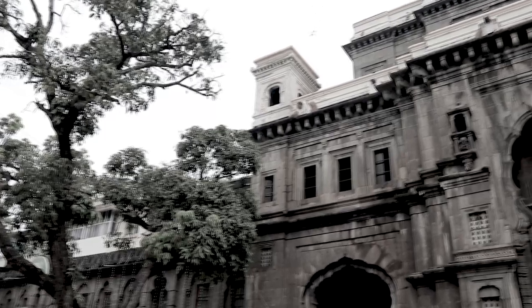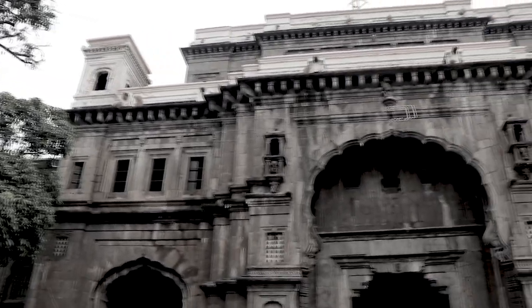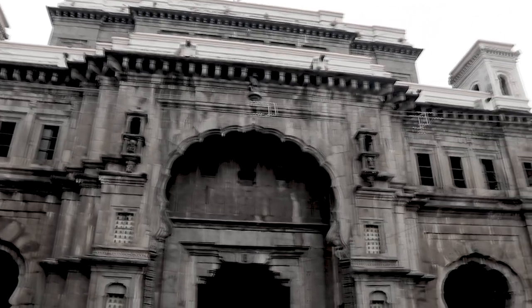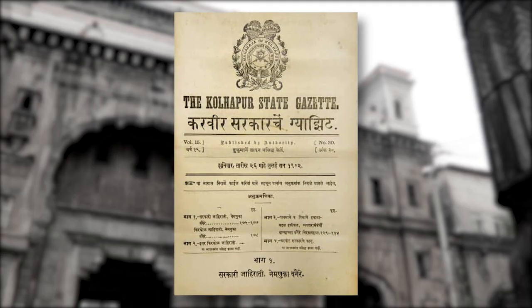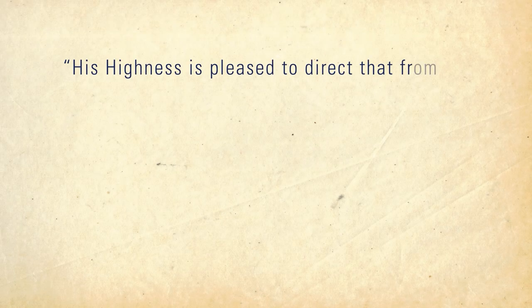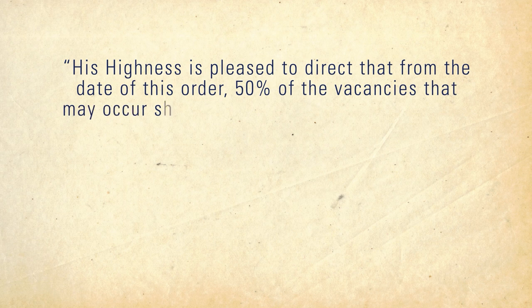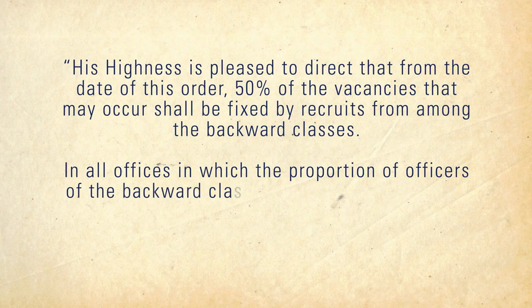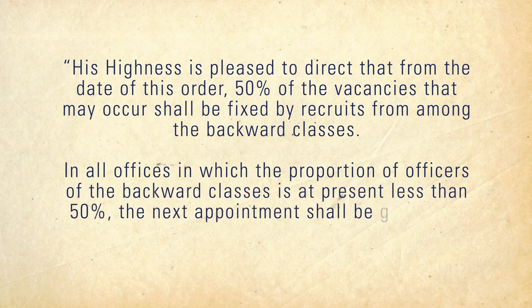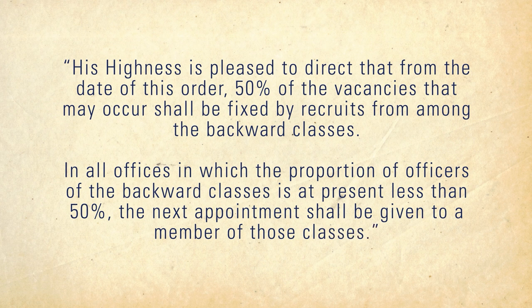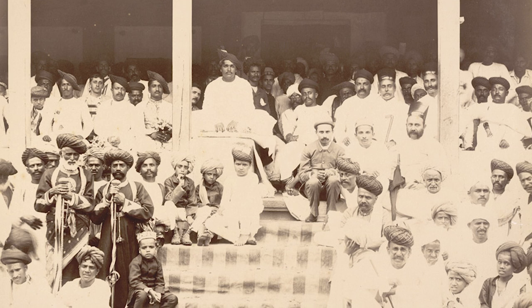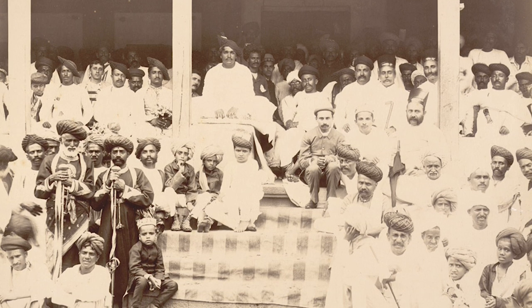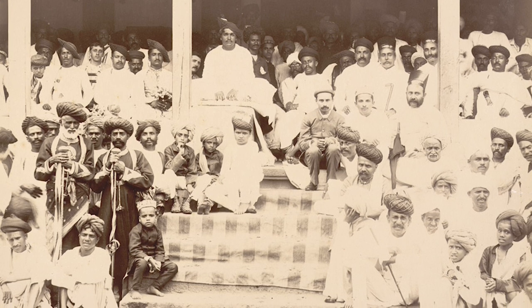On 26 July 1902, an administrative order was passed in the princely state of Kolhapur that sent shockwaves across British India. The order, published in the Kolhapur State Gazette, read: His Highness is pleased to direct that from the date of this order, 50% of the vacancies that may occur shall be filled by recruits from among the backward classes. In all offices in which the proportion of officers of the backward classes is at present less than 50%, the next appointment shall be given to a member of those classes.